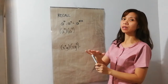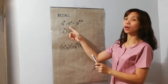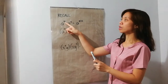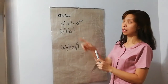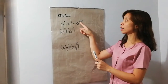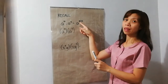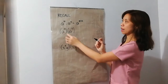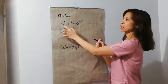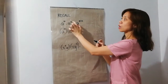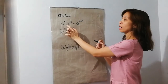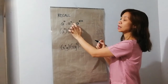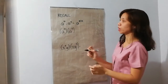But before that, let us have a recall on the law of exponents. We have a raised to m times a raised to n is equal to a raised to m plus n. So, gagawin lang natin, pagpareho sila ng base, kukopya lang natin yung base and then i-add natin yung exponents.